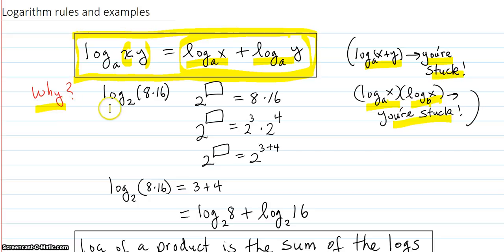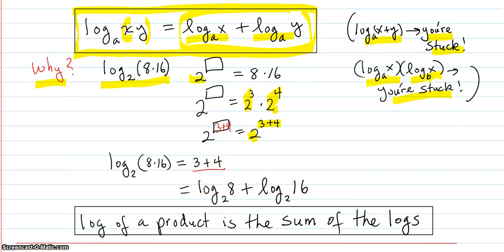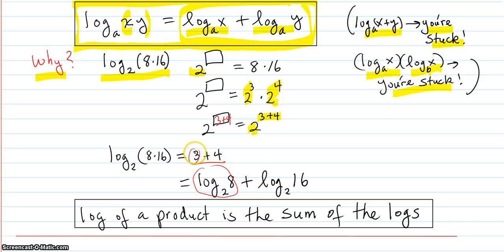So why does this work? Consider log base 2 of 8 times 16. We're asking what exponent you put on base 2 to get 8 times 16. Since 8 is 2 to the third and 16 is 2 to the fourth, we get 2 to the 3 plus 4 — you add the exponents. So log base 2 of 8 times 16 is 3 plus 4, which is log base 2 of 8 plus log base 2 of 16.